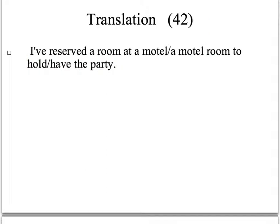第42題說「我已經預定好一個汽車旅館的房間來舉行派對了」。汽車旅館的房間可以說 a room at a motel、in a motel，或是 a motel room。舉行派對可以用 hold the party、have the party，或是 throw the party 都沒有問題。